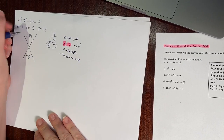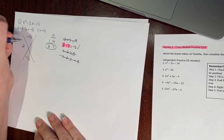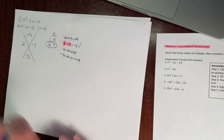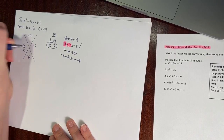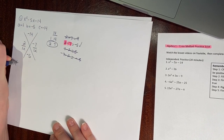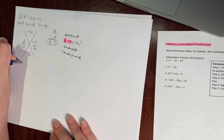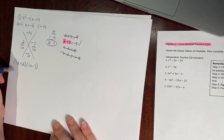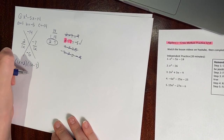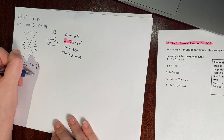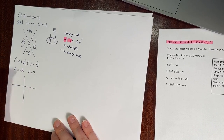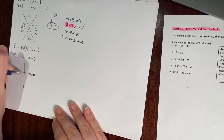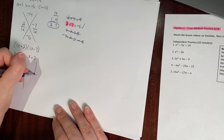I'll go ahead and fill that in: positive 2, negative 7. Then I divide by my a values — divide by 1x, divide by 1x — and I get my factors of 1x plus 2 and 1x minus 7. My zeros are at negative 2 and positive 7. My graph crosses through at 7 and negative 2.